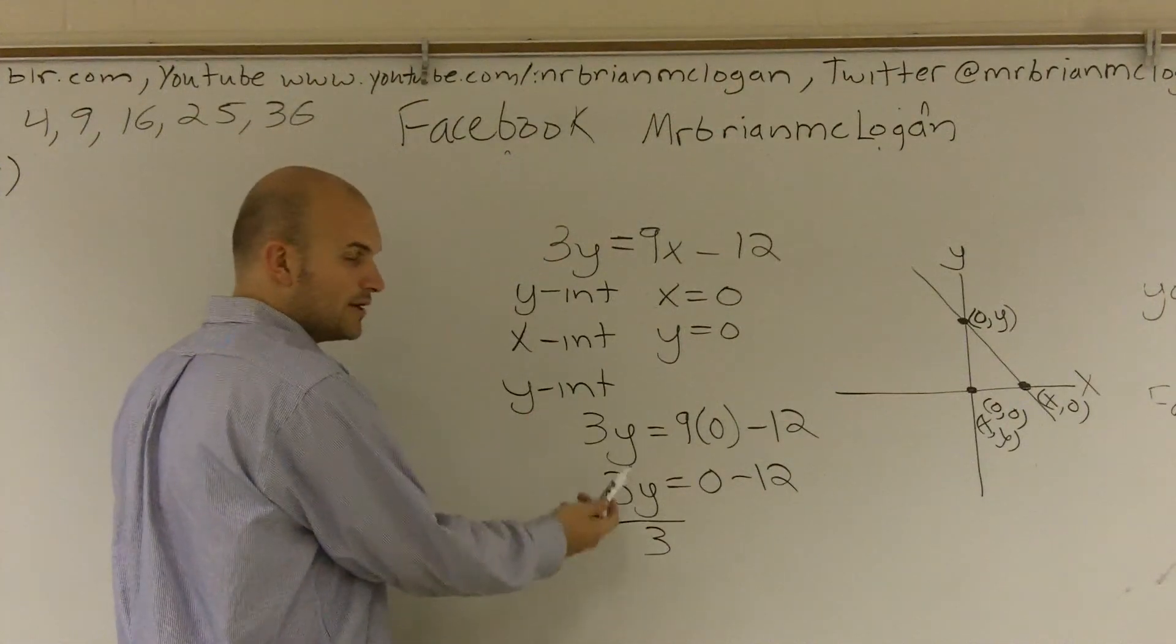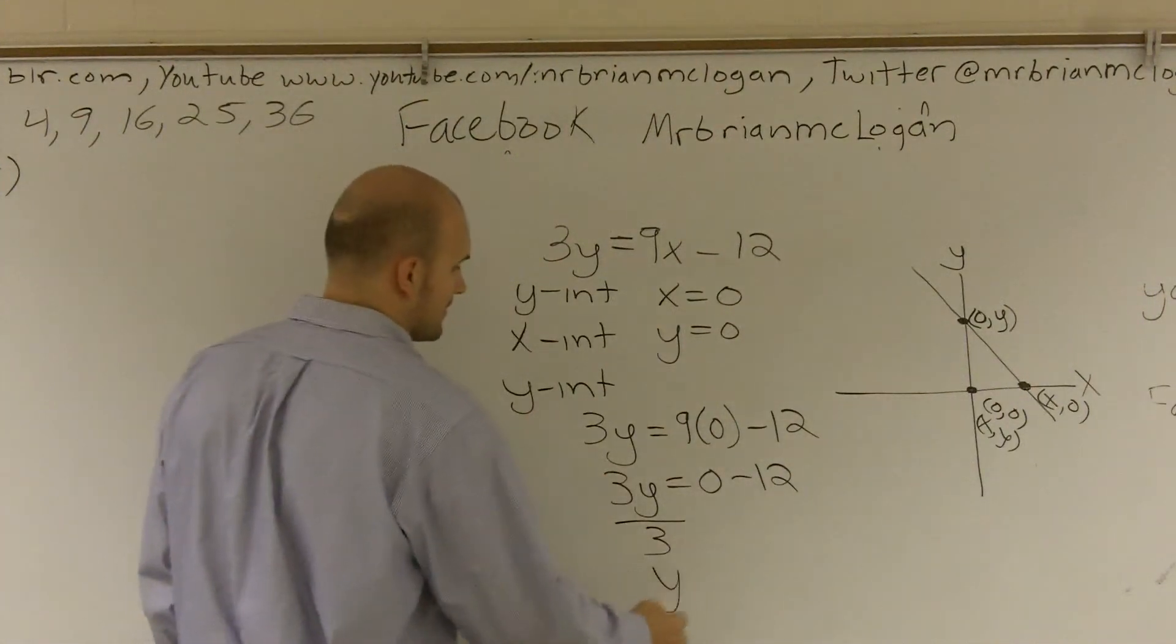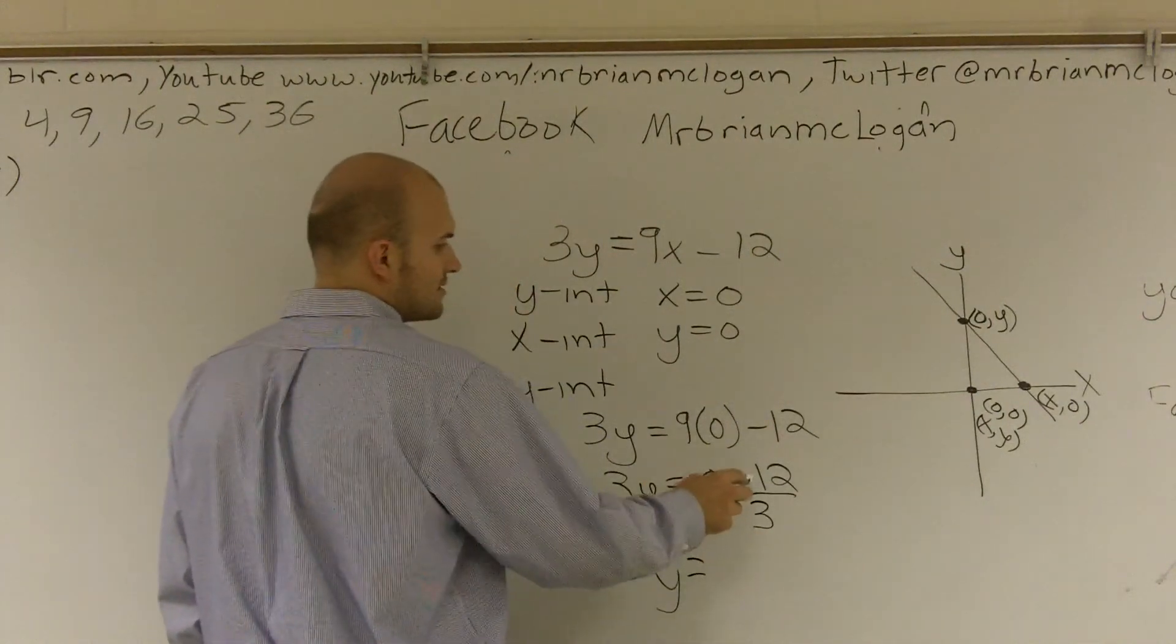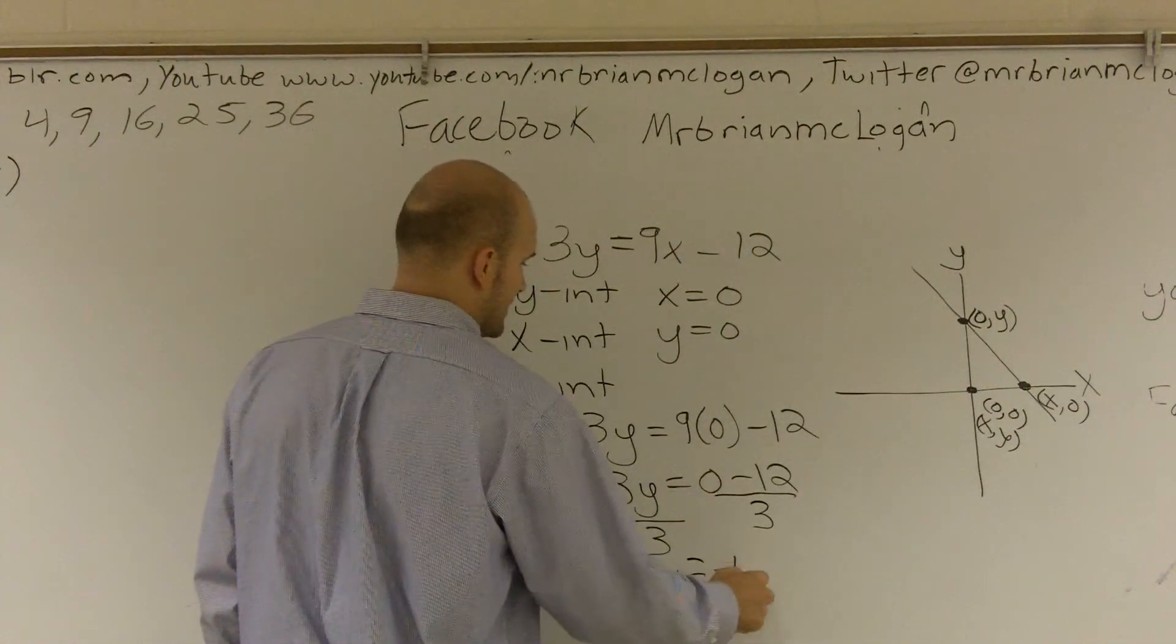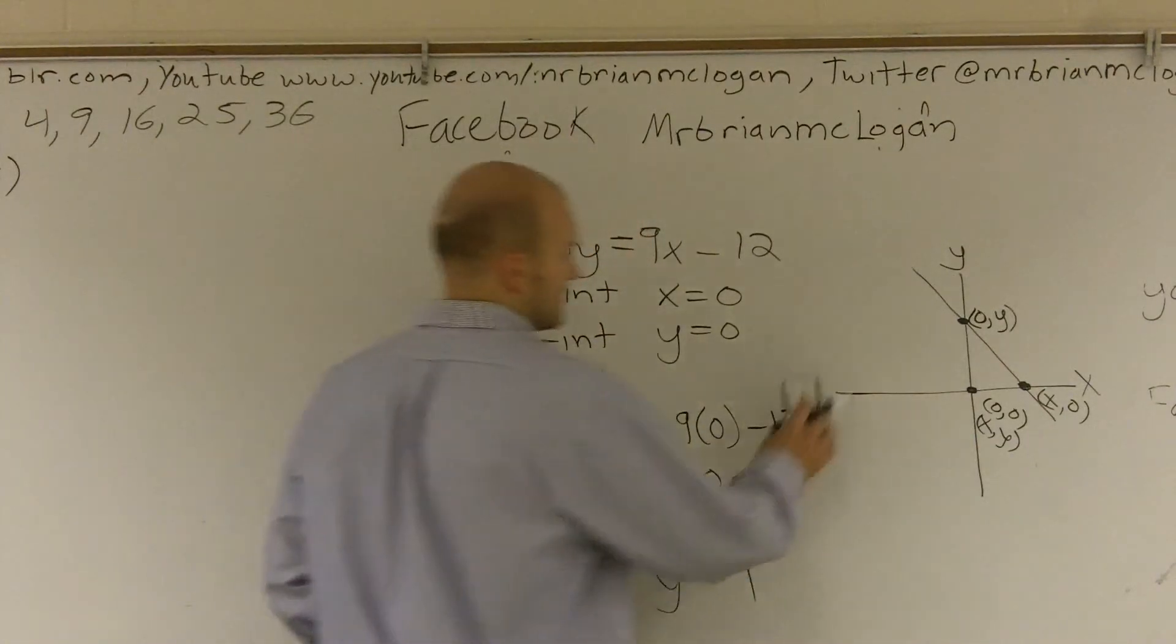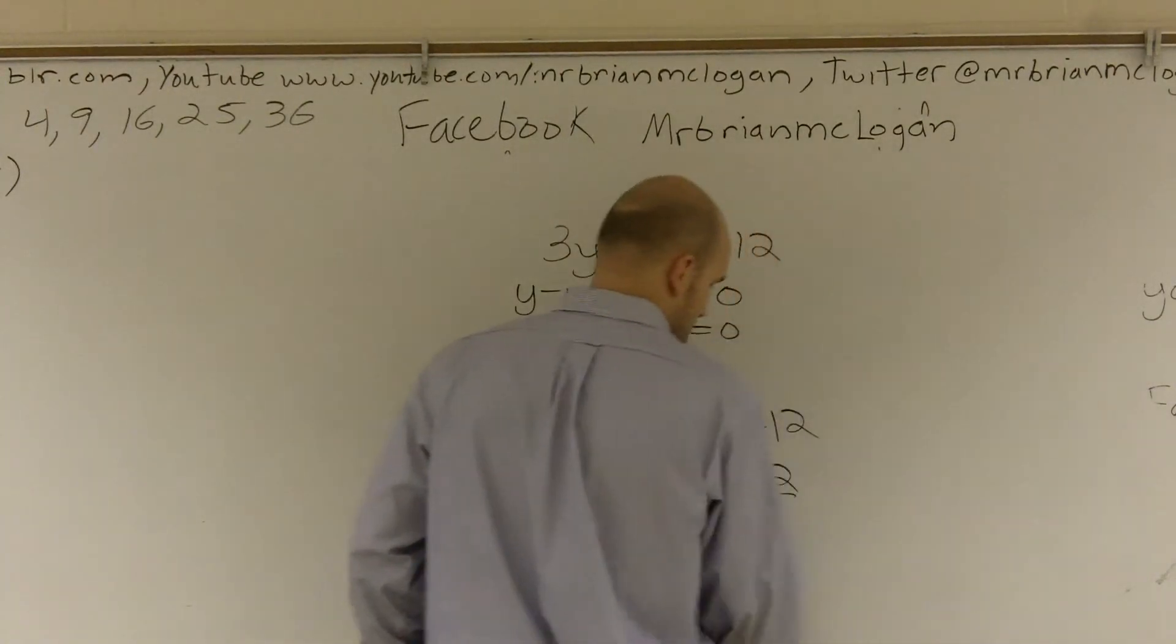Three divided by three gives me one. One times y is y. And I divide three on this side, and what I obtain is negative twelve divided by three is negative four. So let's actually put some points up here.